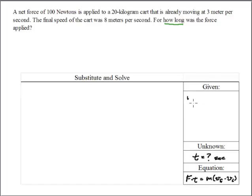Okay, it tells us that the mass equals 20 kilograms. The force net equals 100 newtons. And the velocity initial and the velocity final. The velocity initial is 3 meters per second. And the velocity final is 8 meters per second.